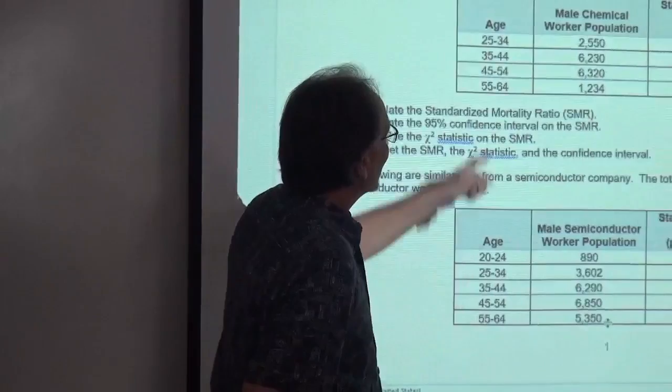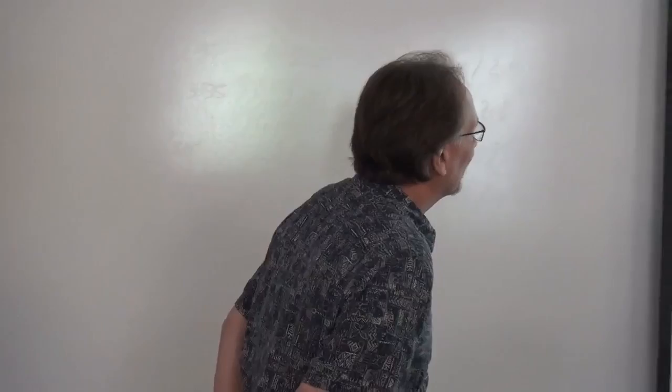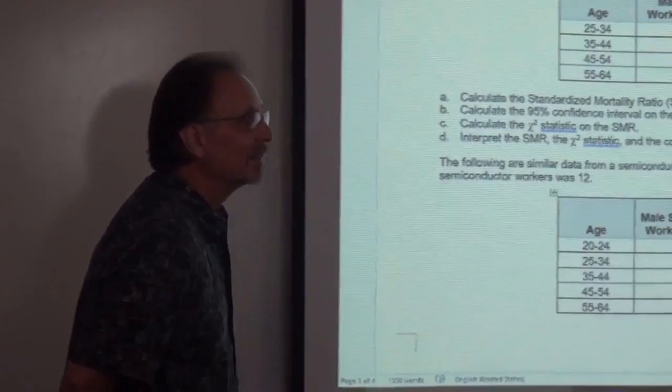This involves the SMR — standardized mortality ratio — confidence interval, chi statistic, and then interpretation. With SMRs, we can actually find whether it is statistically significant and construct a confidence interval.